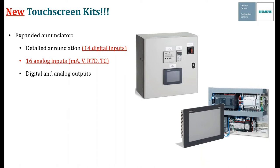We also have digital and analog outputs. A digital output can close a contact to command something else to run, open, or turn off. Analog outputs can send a 4-20mA signal to some other device in the boiler room or back to a control panel — for example, to relay what the burner firing rate is at any time.